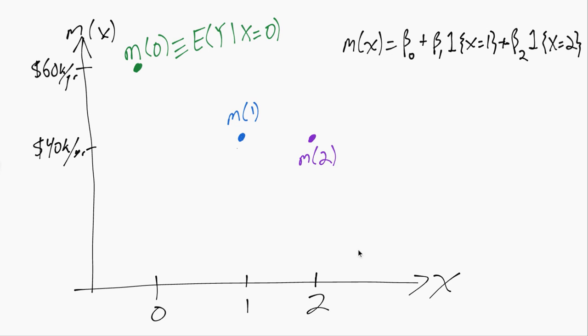First, we can see if we compute M of 0, the indicator function for x equals 1 will evaluate to 0 because we'll have an indicator that 0 equals 1, and we know 0 is not equal to 1. So that will turn out to be 0, and then regardless of beta 1, that entire term will be 0.